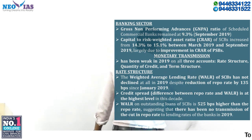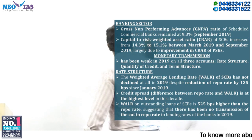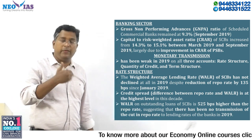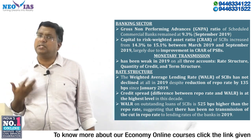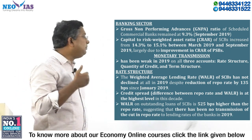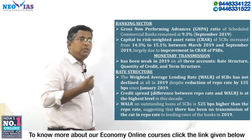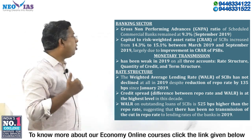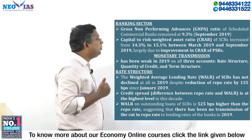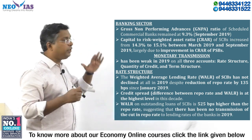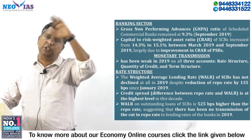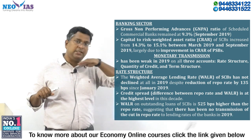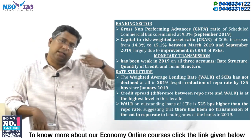Coming to the banking sector — these are common headings which the economic survey covers. Regarding the banking sector, we are taking the latest data. The gross non-performing asset ratio of scheduled commercial banks has remained the same, around 9.3% in September 2019. The gross NPA has remained at around 9.3% — note this down.